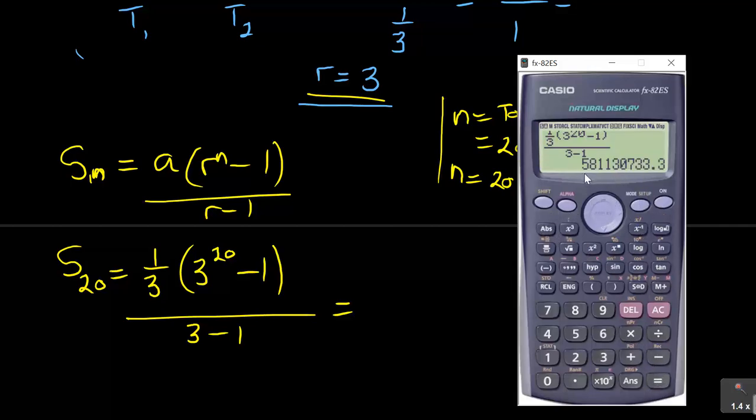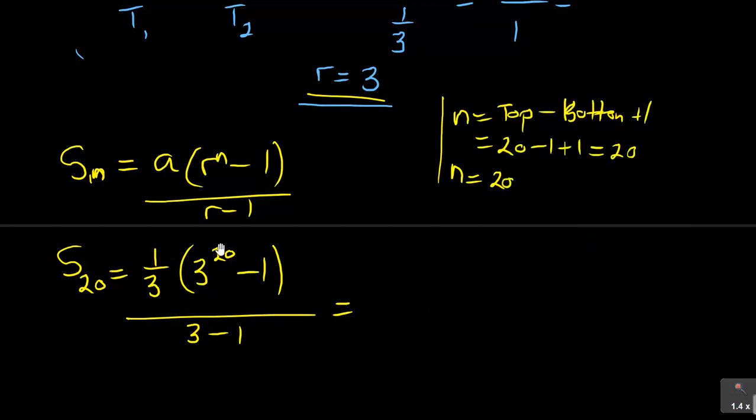It's giving me that big number. It's a very big number there. If I put it in scientific notation, shift mode, to 3 decimal places. It's 5.81 times 10 to the power of 8. So that's what I have is 5.81 times 10 to the power of 8.